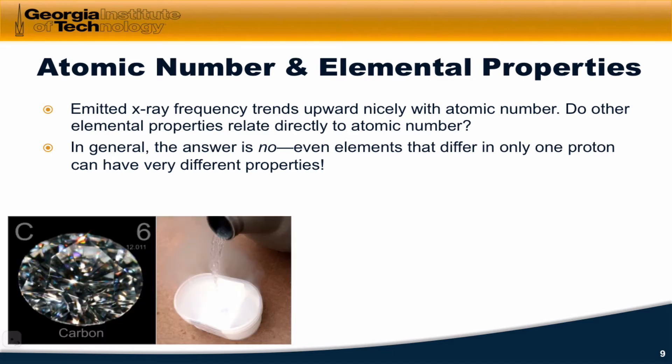A good example of this difference in properties for two elements that are right next to each other in atomic number is carbon and nitrogen. Elemental carbon, as you may be aware, is either diamond, which you see here, or graphite. Elemental nitrogen is a gas at room temperature. And you may have seen elemental nitrogen in liquid form as well.